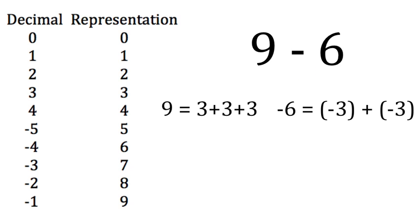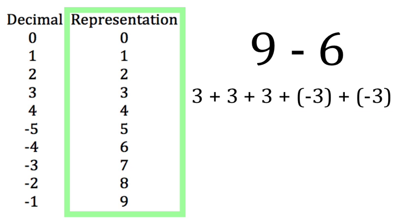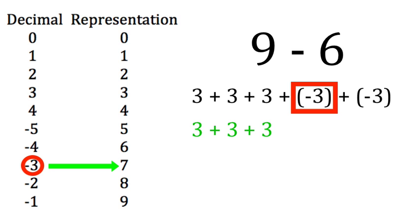So we can say 9 is 3 plus 3 plus 3, and minus 6 is minus 3 plus minus 3. Therefore, 9 minus 6 is equal to 3 plus 3 plus 3 plus minus 3 plus minus 3. Then we use the table once again to convert the decimal numbers into the representation.